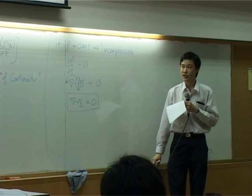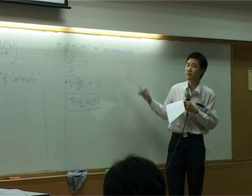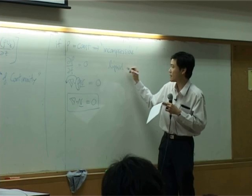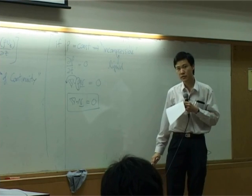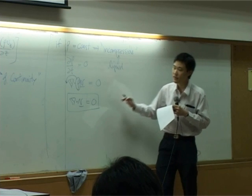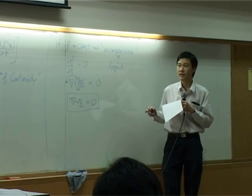Density of fluid does not change. You cannot make it change. So it's constant. All the liquid can be treated as incompressible. So as long as it is incompressible, then del dot v becomes zero by equation of continuity.